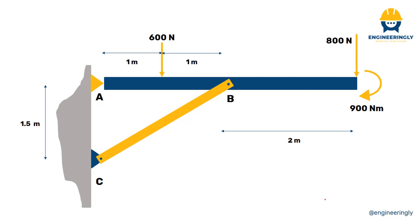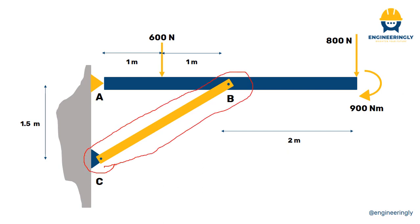Hi and welcome back. In today's video you're going to learn how to find the reactions at the support of a statically determinate structure. For this particular structure we are asked to find the compressive force acting on this element of the structure. The support at point A is assumed to be a pin support, and the support at point B is assumed to be a roller support. So let's get started.